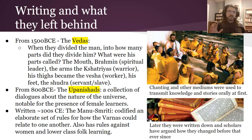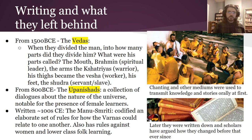It's a set of ideas about how the world works or should work. It says: 'When they — meaning the creator god — divided the man, what were his parts called? The mouth, the Brahmin — spiritual leaders; the arms, the Kshatriyas — the warriors; the thighs, the Vaishya — the workers; and his feet, the Shudra — the servants or slaves.' So it's trying to describe the different kinds of people.